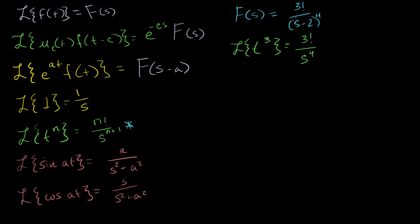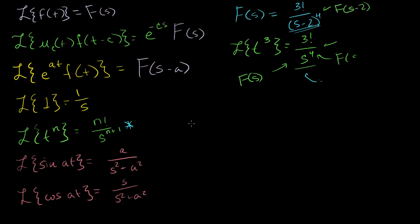Now this thing isn't exactly that — they're not quite the same thing. I find it useful to go through this step carefully so you don't make a careless mistake. What's the difference between 3 factorial over s to the fourth and the expression we're trying to invert, 3 factorial over s minus 2 to the fourth? Well, we've shifted our s. If we call 3 factorial over s to the fourth as F of s, then this expression is F of s minus 2. So we're dealing with a shifted F of s — which means a equals 2.